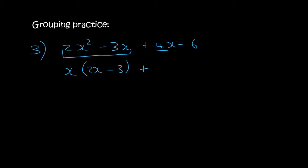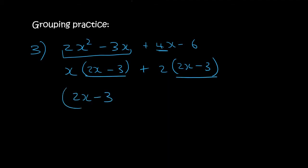In the second two terms we can take out a 2, and so you'd be left with 2x minus 3. That's the same in both groups, so 2x minus 3 is the common factor, and then we're left with x plus 2.